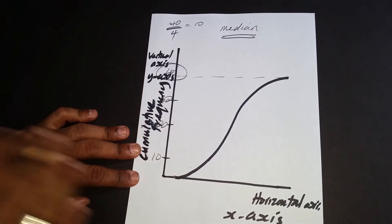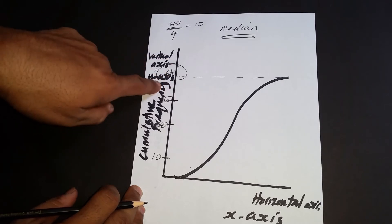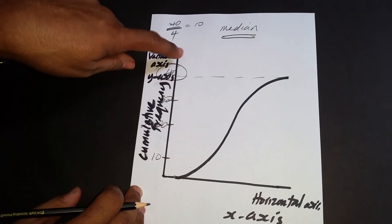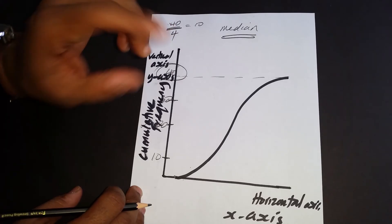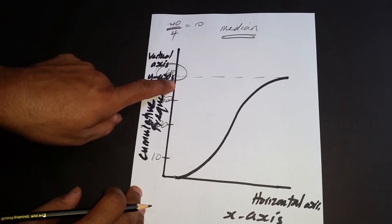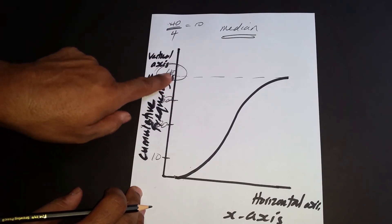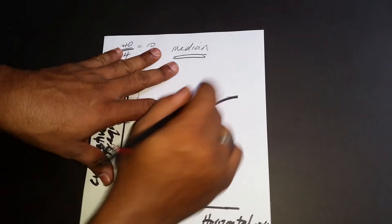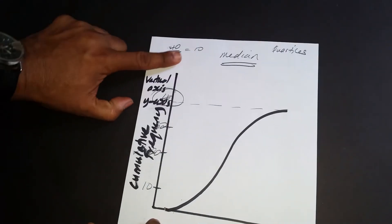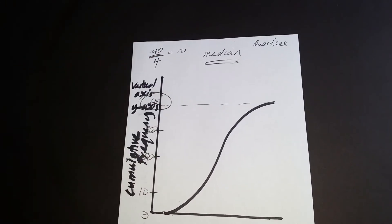So the vertical axis values would be 10, 20, 30, and 40. The y-axis represents number of plants and the x-axis represents height in centimeters, for example. The total frequency or final value in the cumulative frequency column must always be at the top here — stop there, don't number past it, as that might confuse you. Dividing 40 by 4 gives us the quartile intervals.